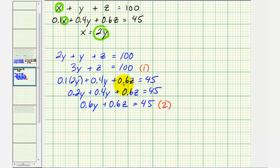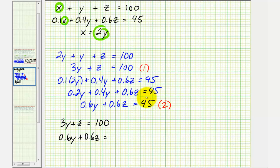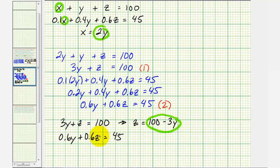Now we'll solve equation one and two as a system of two equations with two unknowns. We have 3y plus z equals 100, and 0.6y plus 0.6z equals 45. We can easily solve the first equation for z by subtracting 3y from both sides: z equals 100 minus 3y. We then substitute 100 minus 3y for z in the second equation, giving us 0.6y plus 0.6 times (100 minus 3y) equals 45.